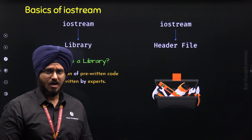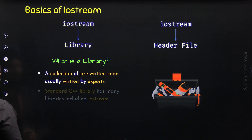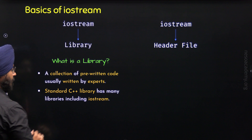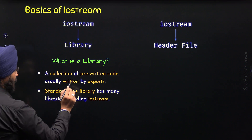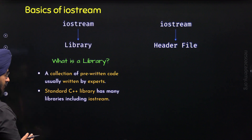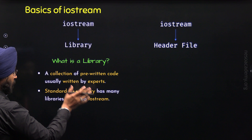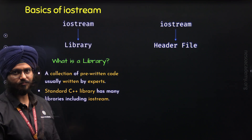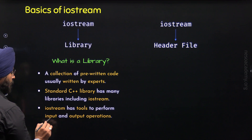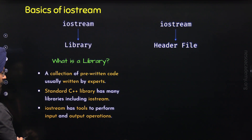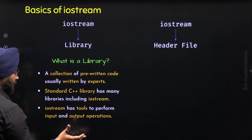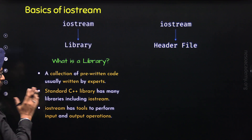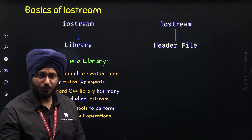Now let's move to the second point. The standard C++ library has many libraries, including Iostream. There is one big library called the standard C++ library which is available to us, and it is a collection of many different libraries. One such library is the Iostream library. Iostream has tools to perform input and output operations — it is the collection of tools that allows us to perform input and output operations in C++.